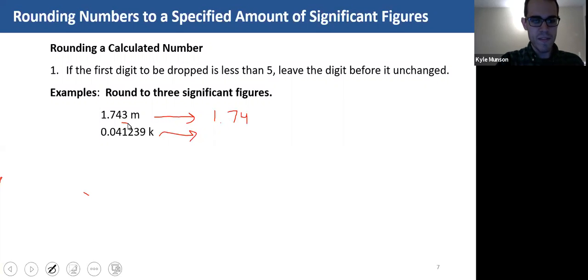How about this next example? Well, it originally had five significant figures. Let me write the unit there. Don't want to forget that. 0.0412 k. That's how we're going to write this. So again, the three here, the first digit to be dropped is less than five, so we left the two unchanged.